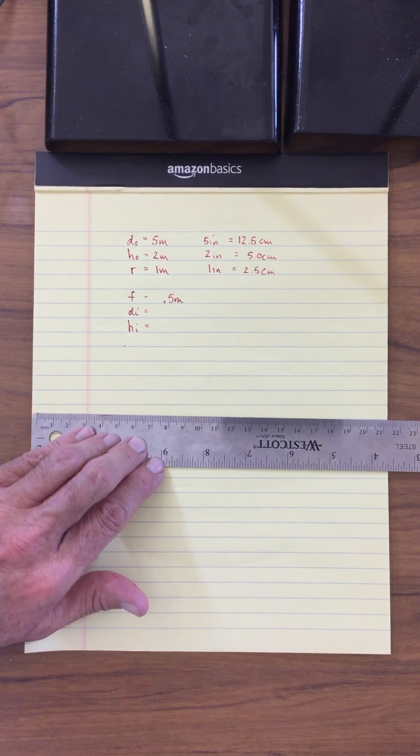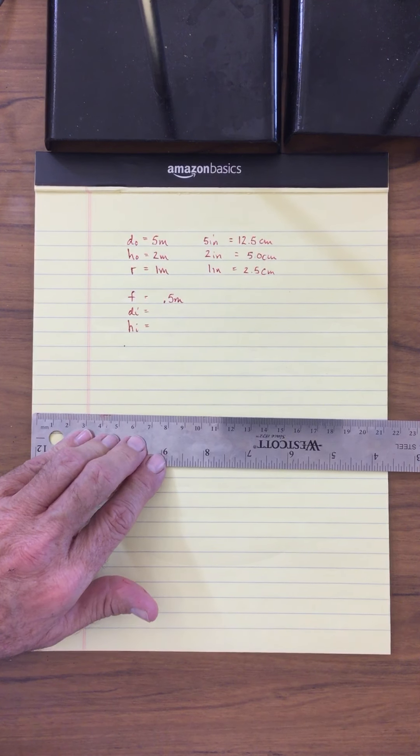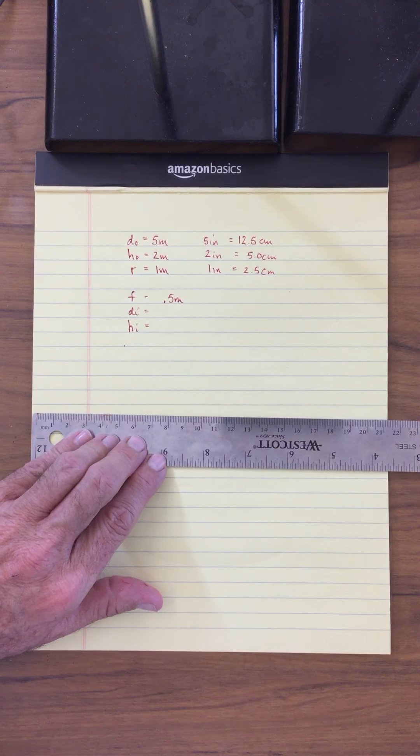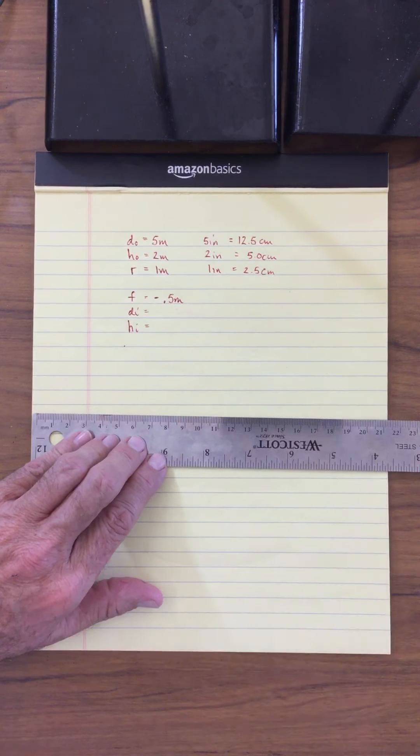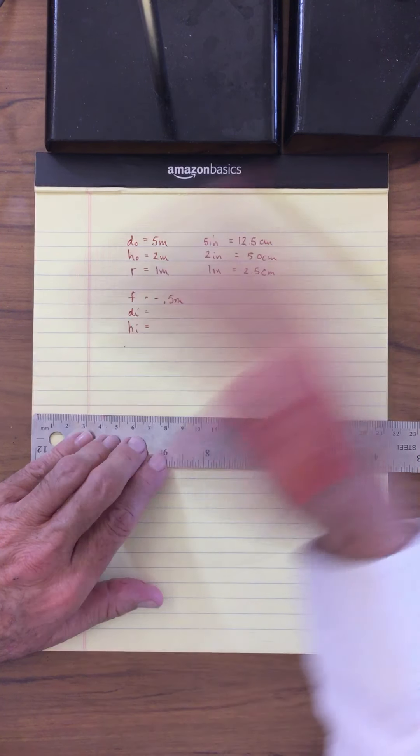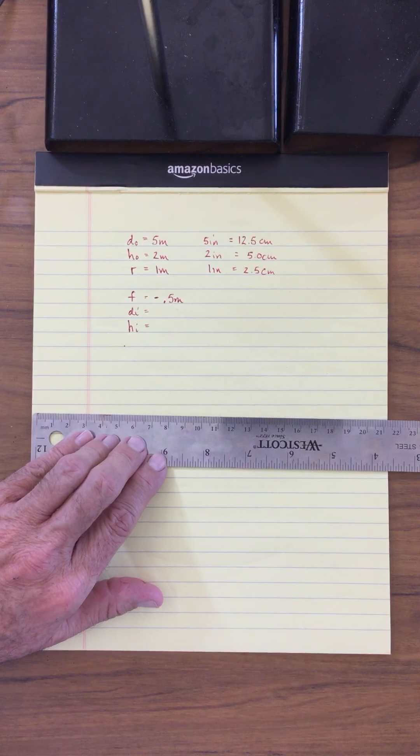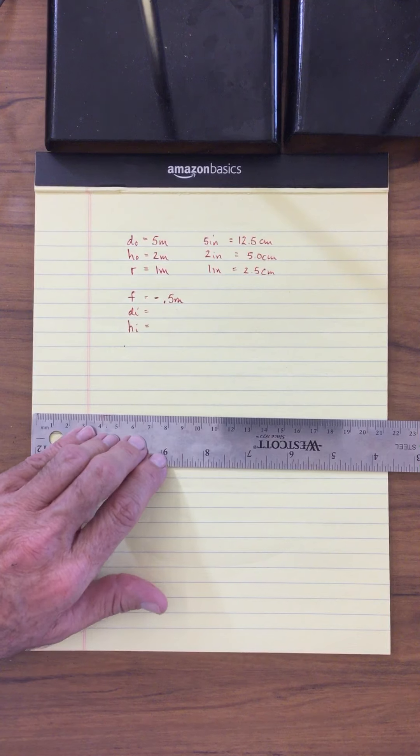However, if you remember, this is a convex mirror. The focal point is on the other side of the mirror, so I therefore need to put a negative, and that's really important for all of our mathematics. If you don't put that negative in there for a convex mirror, all of your calculations will be completely wrong. So please make sure that you get this right for the convex mirror.